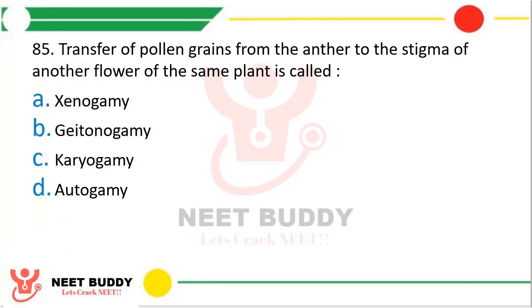Question number 85: Transfer of pollen grains from anther to stigma of another flower of the same plant is called. Option A: Xenogamy. Option B: Geitonogamy. Option C: Karyogamy. Option D: Autogamy. Transfer of pollen grain from anther to stigma of another flower of the same plant — the correct answer is option B, it is called Geitonogamy.